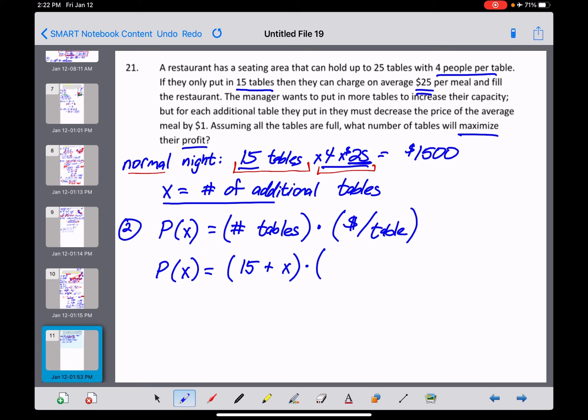but for every table we add, which is X, we have to drop a dollar off the price. So the price per meal is going to be $25 minus whatever X is. But wait a minute now. There's four tables, which means four meals, or four people per table, I should say.